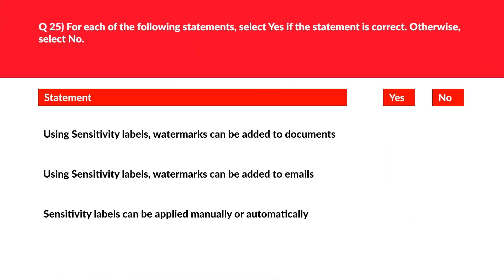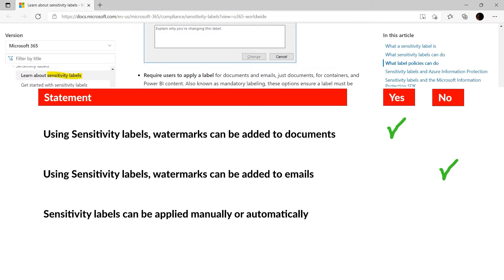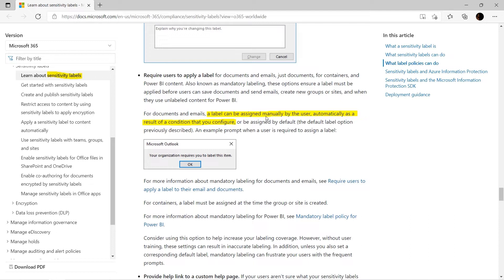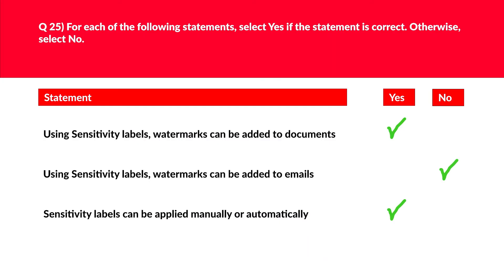Another question related to sensitivity levels. If you paid close attention to the last question, this should be a piece of cake. Statement one: using sensitivity levels, watermarks can be added to documents — this is true, as we saw in the official documentation. Statement two: sensitivity levels can be applied manually or automatically — this is also true, as users can add watermarks automatically when a condition is met, in addition to doing it manually. The official documentation confirms a level can be assigned manually by the user or automated by meeting specific configured conditions. We'll lock these as the correct answers.